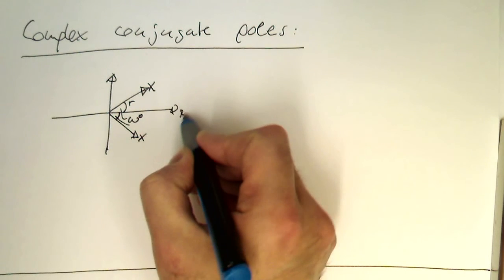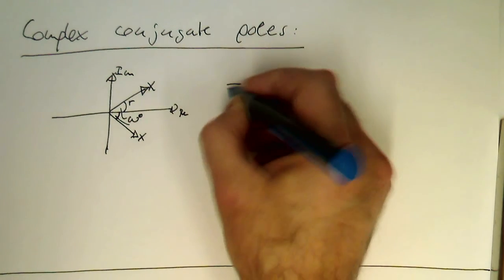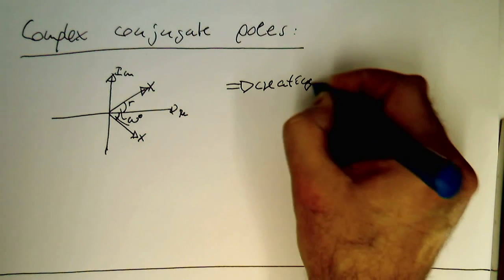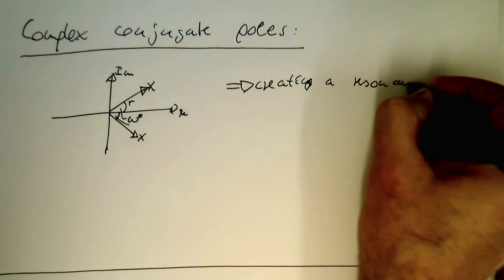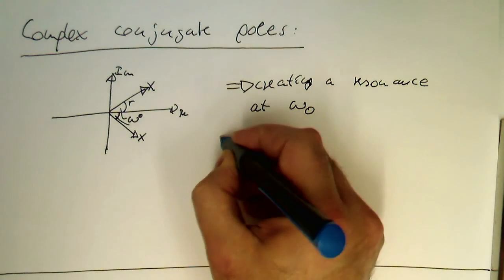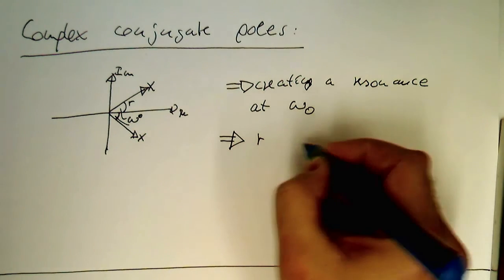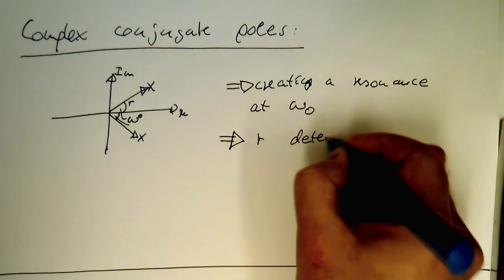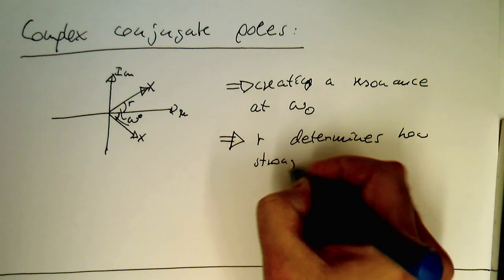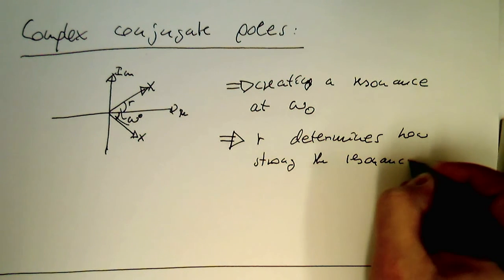Then we've got the same omega also here. So real imaginary, and so what complex conjugate poles do is they are creating a resonance at omega 0.